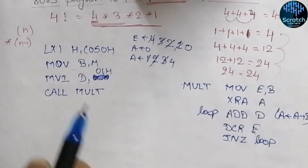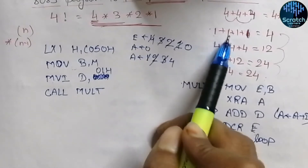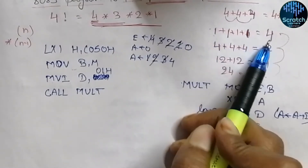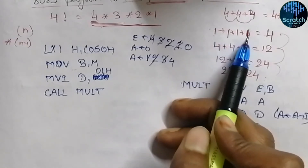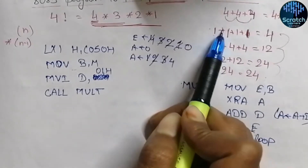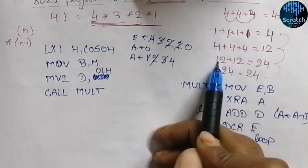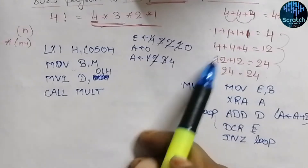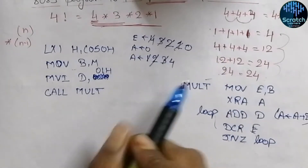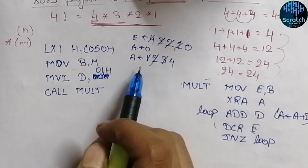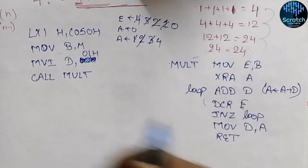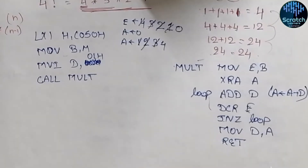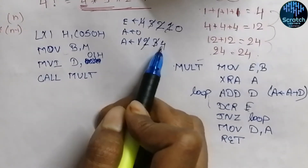What we did is add one four times to get the value four. You might think this seems pointless since we directly input four, but this same block is used to perform the repeated additions like four plus four plus four. Once the accumulator contains four, we move the accumulator's content into register D and then return to the main program. At this point register D holds four.